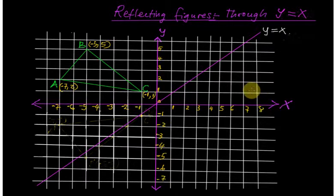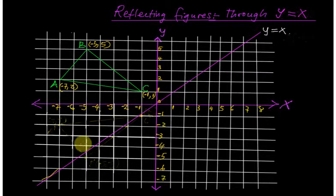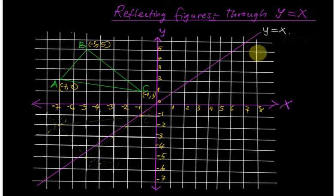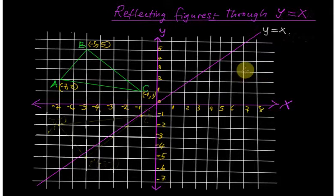We are reflecting an object through the line y equal to x. This is a slant line through the origin, where x equals 0 and y equals 0. The line y equal to x is where values of x are interchanged with values of y. So if y equals 5 and x equals 2, then y becomes 2 and x becomes 5 — you interchange the values of x and y.